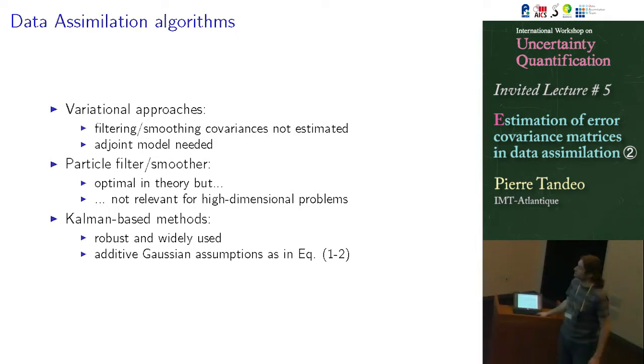So I prefer to use sequential methods like particle filters or Kalman-based methods. So the particle filter, we talked about this during the last different talks yesterday. And it's optimal in theory. But I think for the moment in data assimilation, it's still a problem with high-dimensional. So I prefer to stay on the Kalman equation.